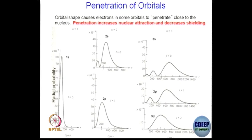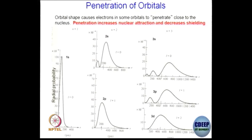The probability of finding a 1s electron towards the nucleus is quite high. If you look at the 2s electron, the probability of finding a 2s electron at the nucleus is not that much; of course, there is a node at a certain distance, after which the probability of finding this 2s electron is quite high. If you look at the 3s electron, one more node is added. If you compare 2s versus 2p, 2s has some component very close to the nucleus, whereas 2p does not have really that much component very close to the nucleus. So, penetration is actually meaning how much these orbitals are contributing close to the nucleus.